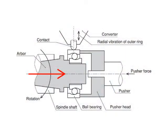The spindle rotates the inner ring with support of the arbor. The pusher keeps the outer ring from rotating and also applies axial force to it with the pusher head.